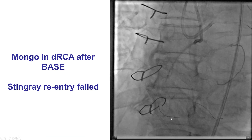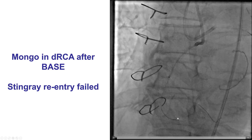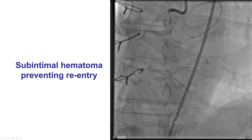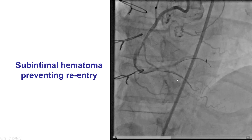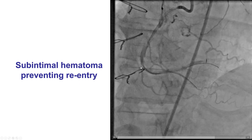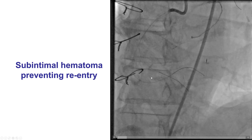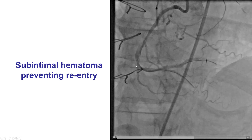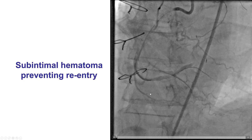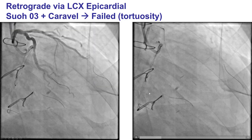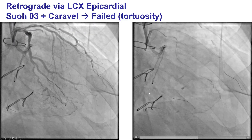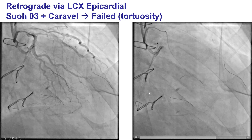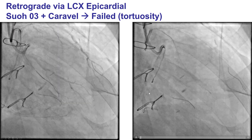After doing that, we delivered a stingray balloon and tried to do re-entry. Unfortunately, re-entry did not succeed in the distal RCA. The reason was that we had created a significant subintimal hematoma during our attempts to advance the knuckle into the vessel. We tried several times with the stingray but were unsuccessful.